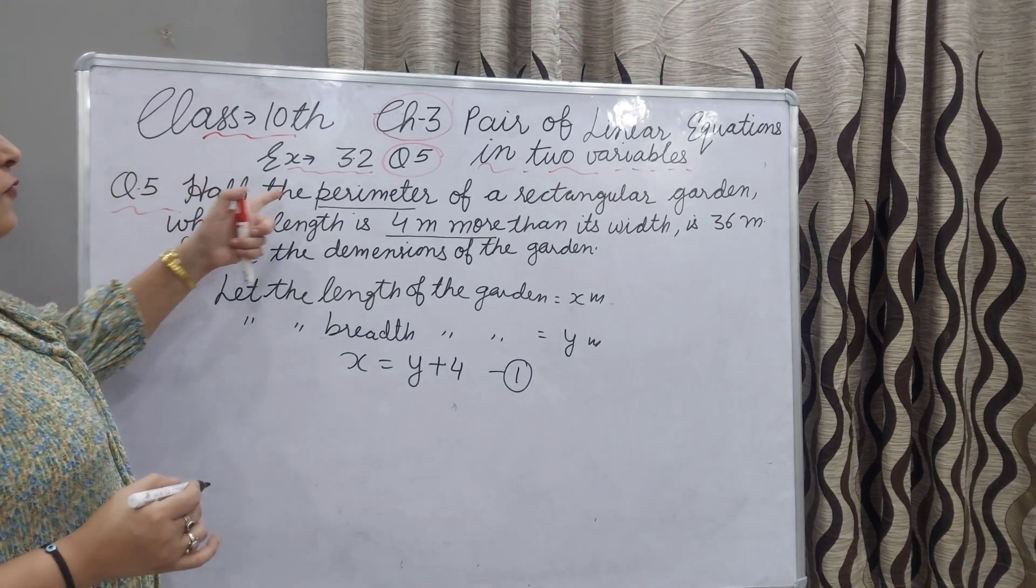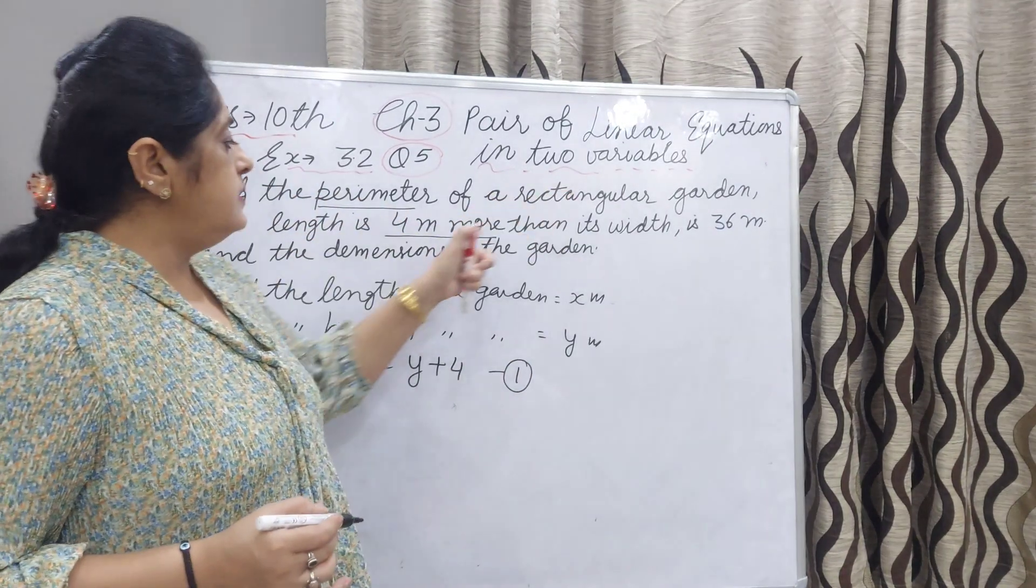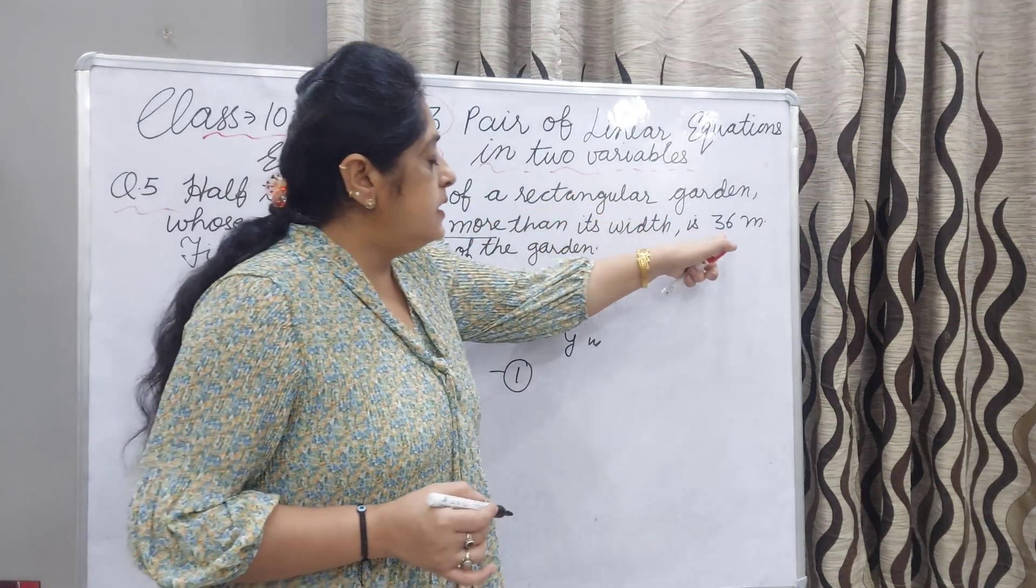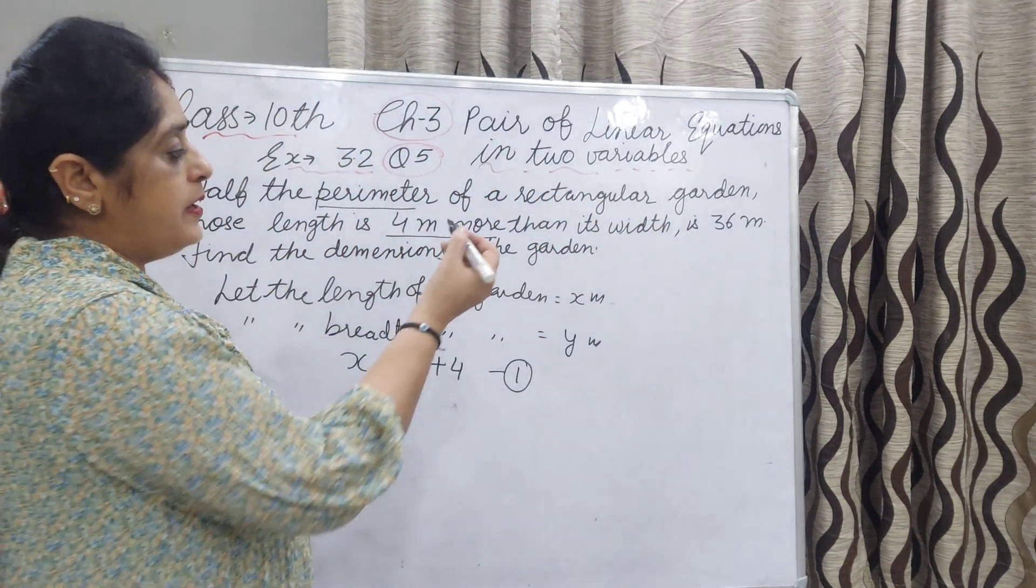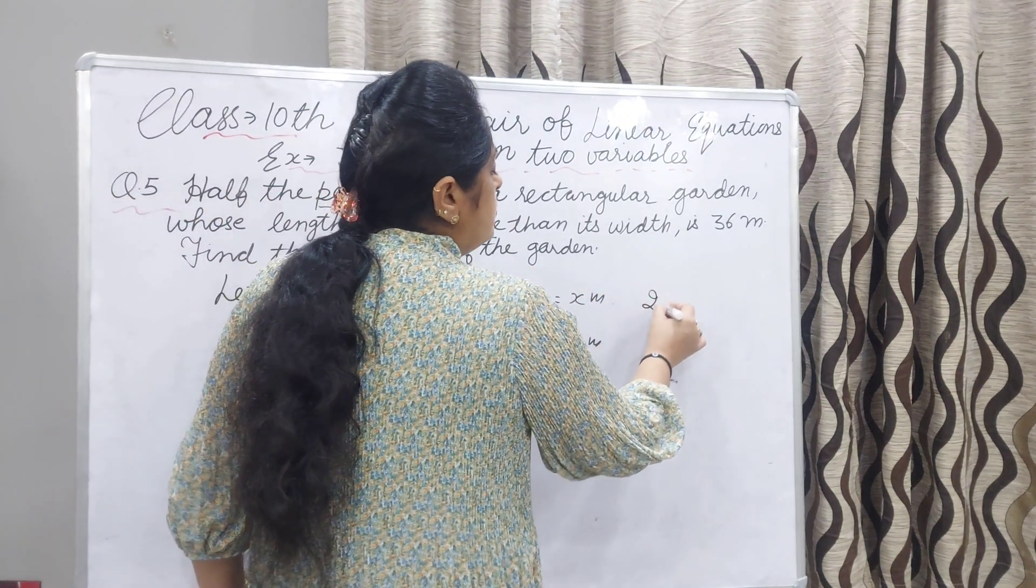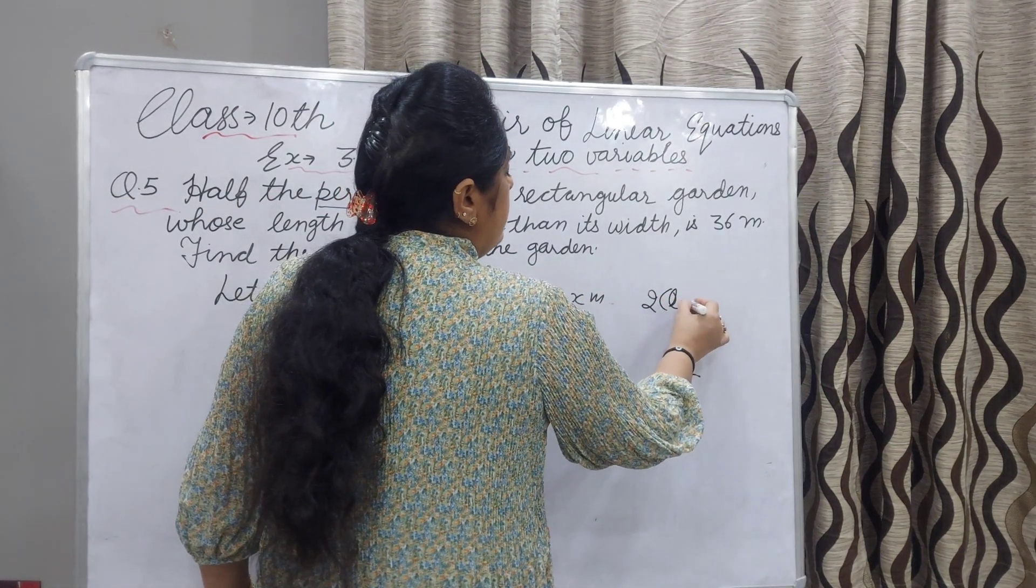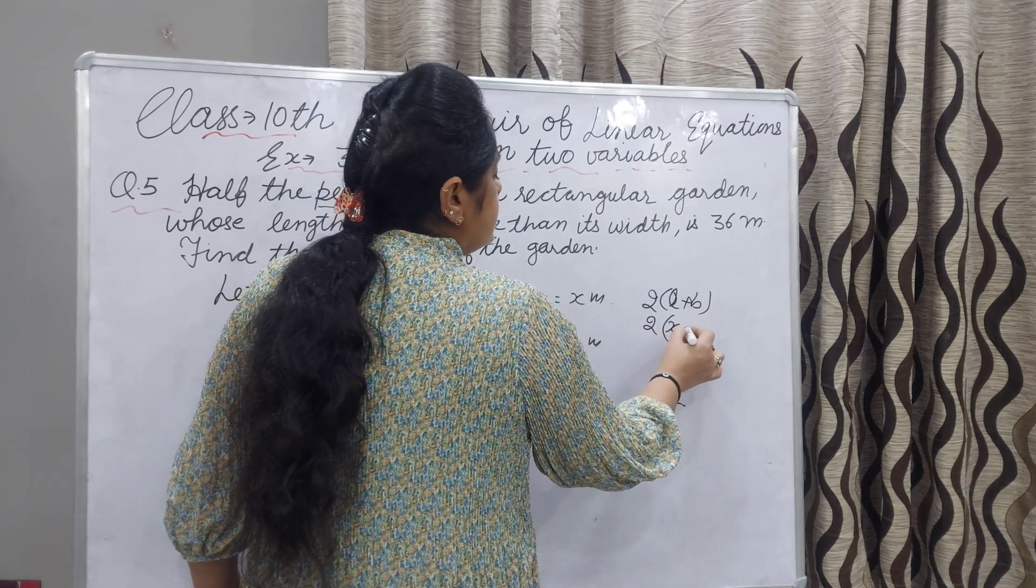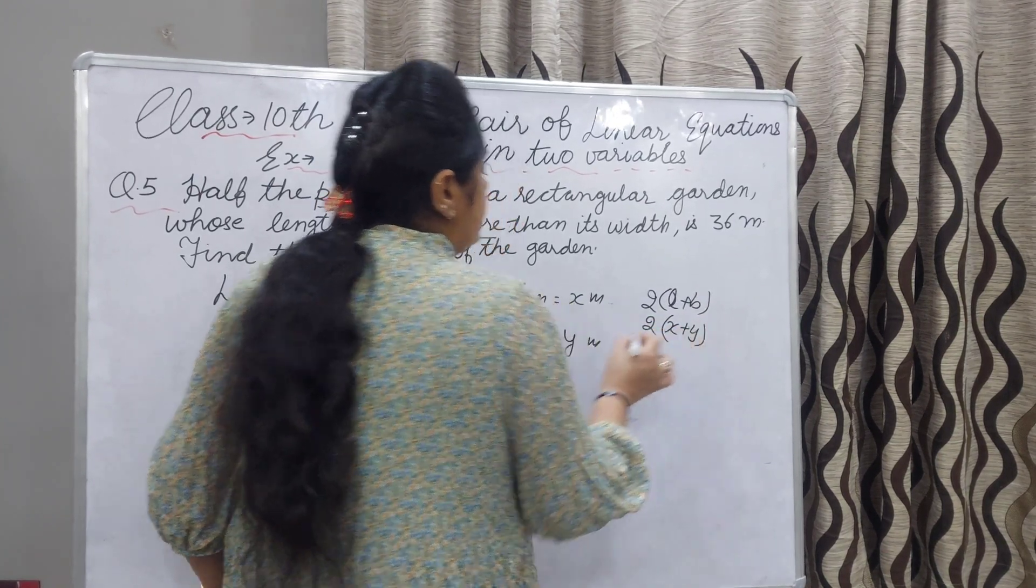Now we are saying half of the perimeter is 36. What is the formula for the perimeter of a rectangle? 2 into L plus B. Our L is x and B is y. That is the perimeter.